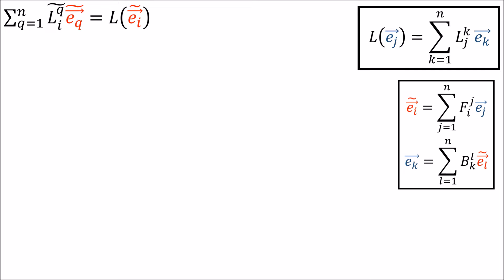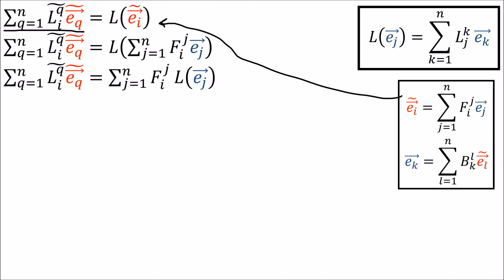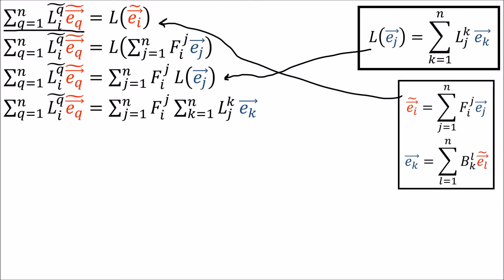Let's try to figure this out. We're taking L of E_i-tilde and writing the output vector as a linear combination of the E-tilde basis vectors using these L-tilde coefficients — we need to solve for what those are. First, we use our forward transform to rewrite the new basis vectors in terms of the old basis vectors. Then we use the linearity of L to take the sum and scaling coefficients outside the function, and use this definition to write the output L of E_J as a linear combination of the old basis vectors.